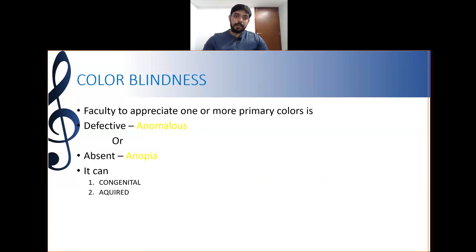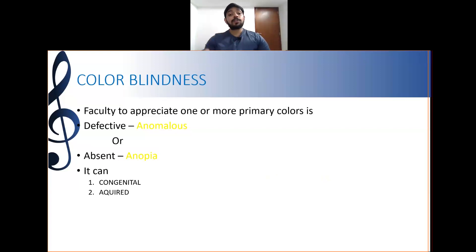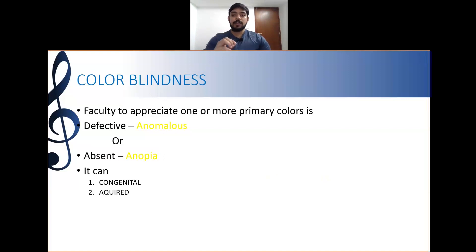Color vision deficiency is classified as: anopia — which is absent color vision — including protanopia, deuteranopia, and tritanopia; and anomalous trichromacy — including protanomaly, deuteranomaly, and tritanomaly. Both anopia and anomalous forms are further classified as congenital or acquired.